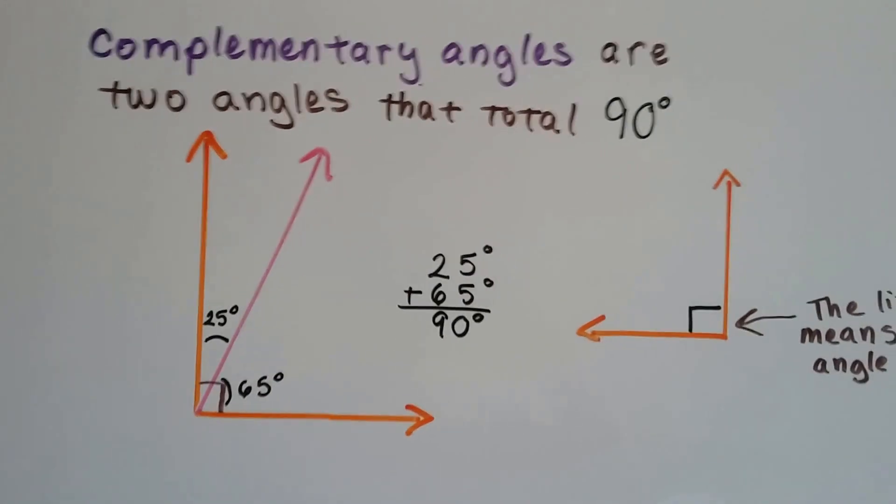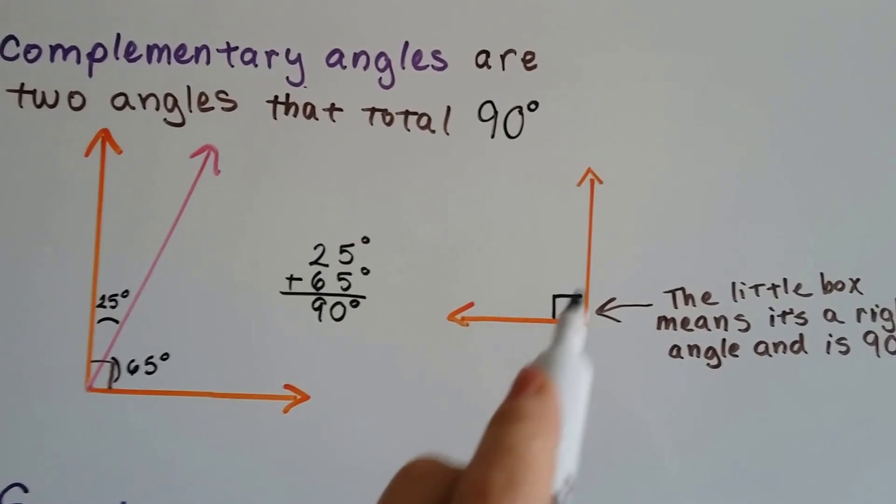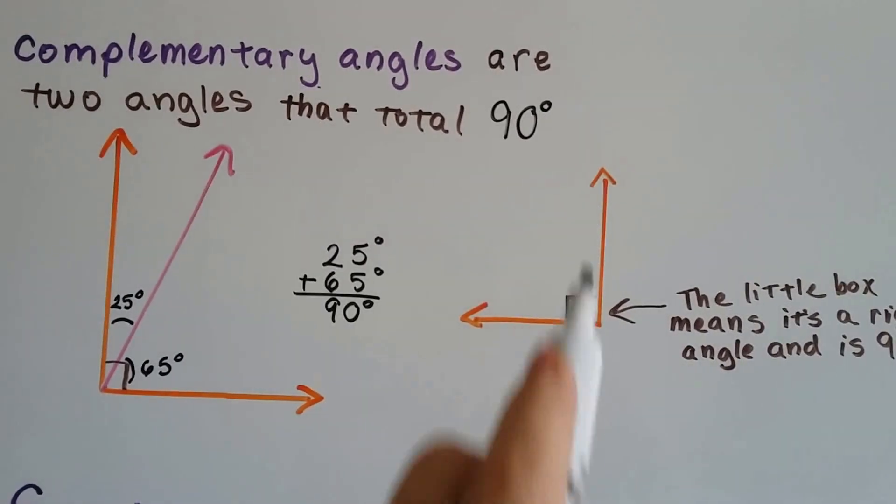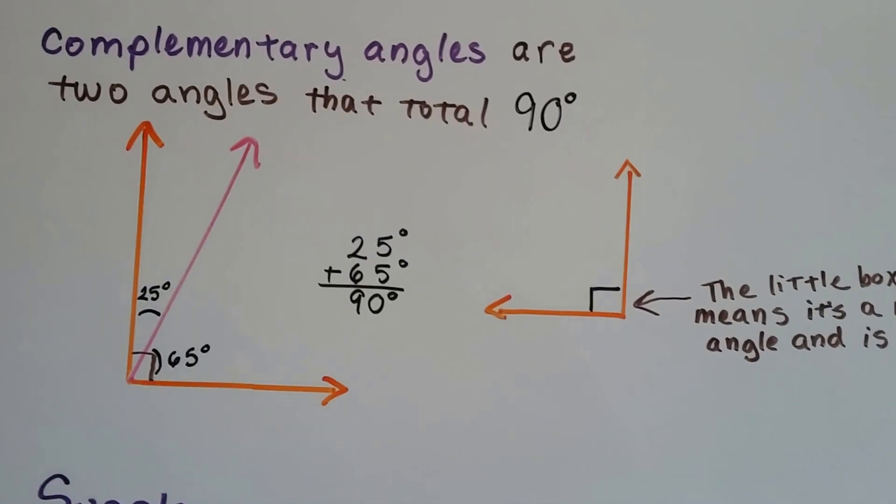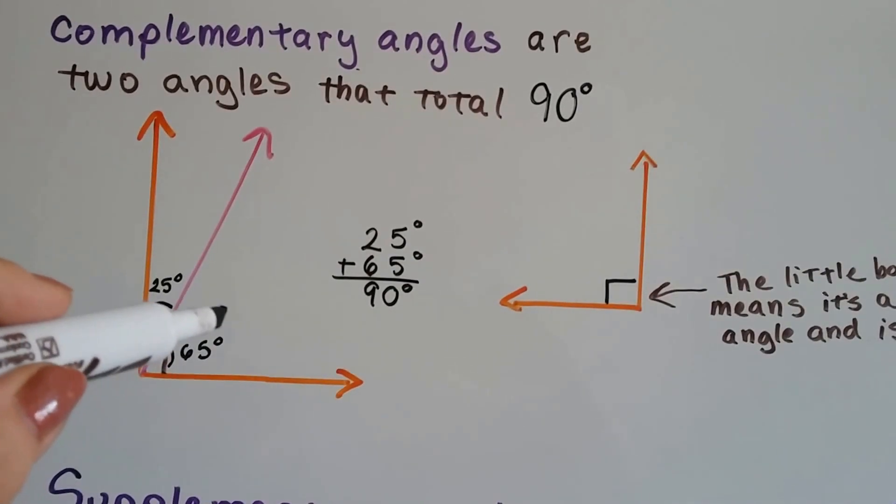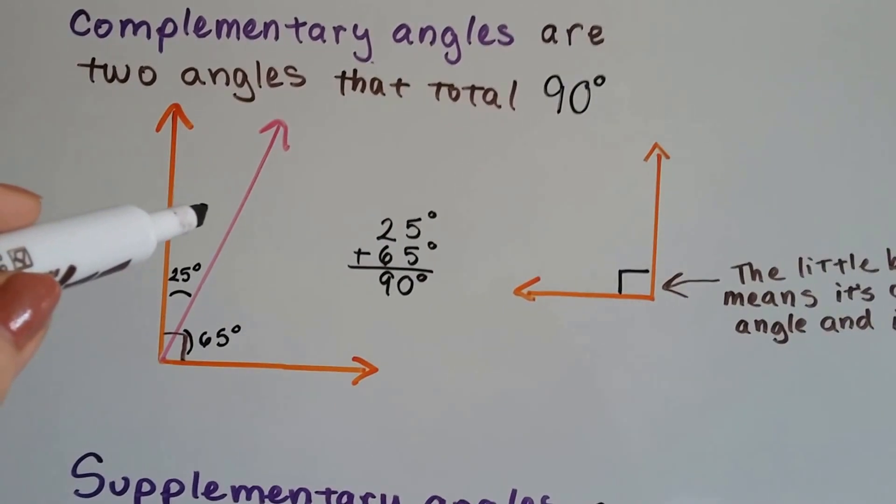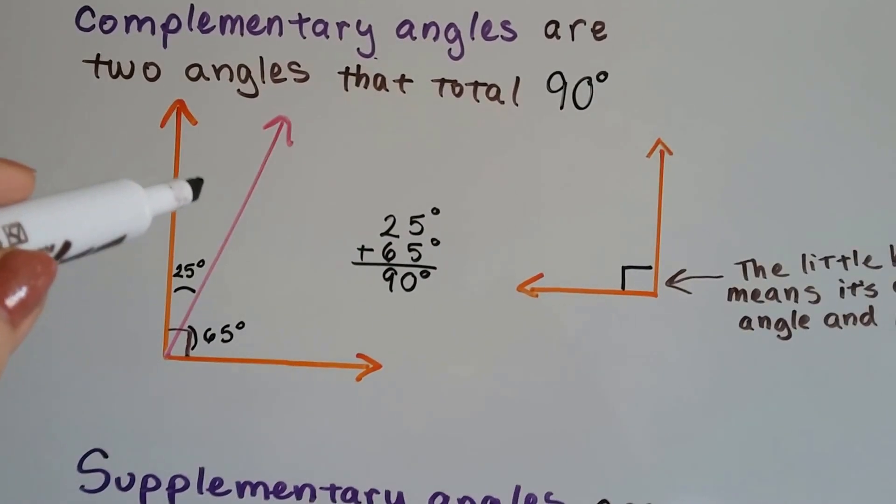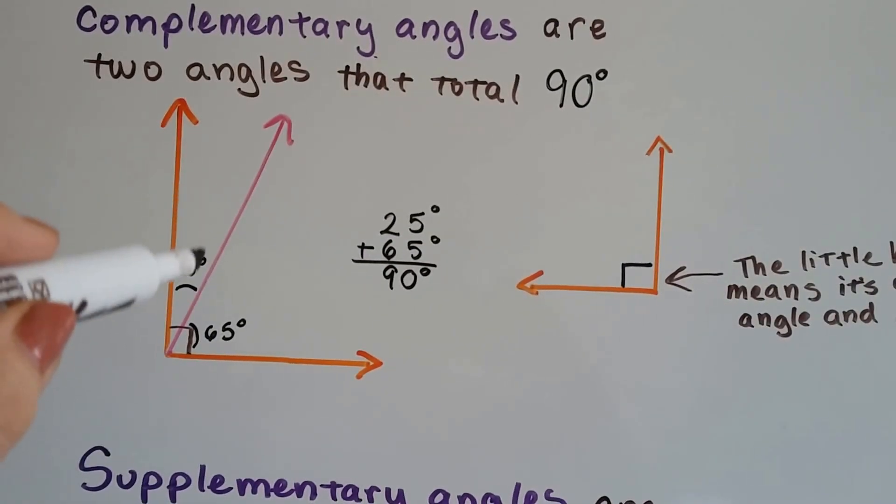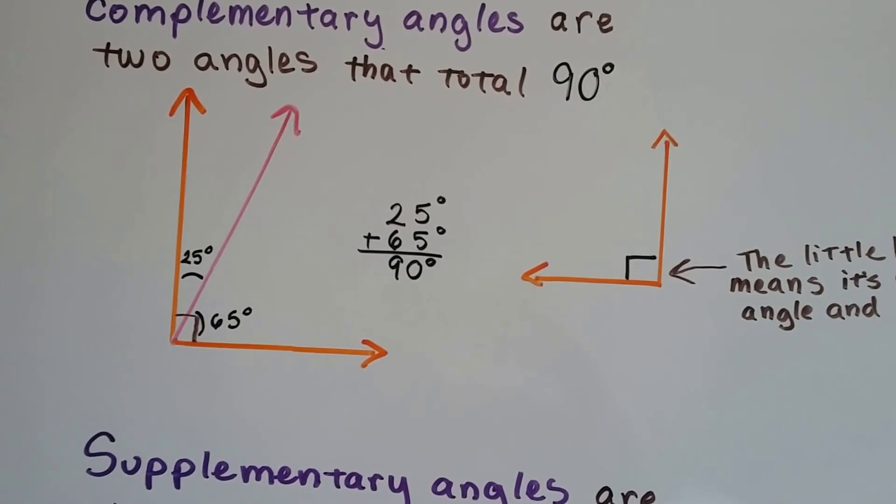Complementary angles are two angles that total 90 degrees. When you see this little box, it means it's a right angle, like the corner of a box, right? Corner of a square. And if we know that this angle is 65 degrees, all we have to do is subtract it from 90 to find out that that's 25 degrees, or vice versa. If we know that's 25 degrees, we could subtract the 25 from 90, and we'll know that that's 65 degrees.